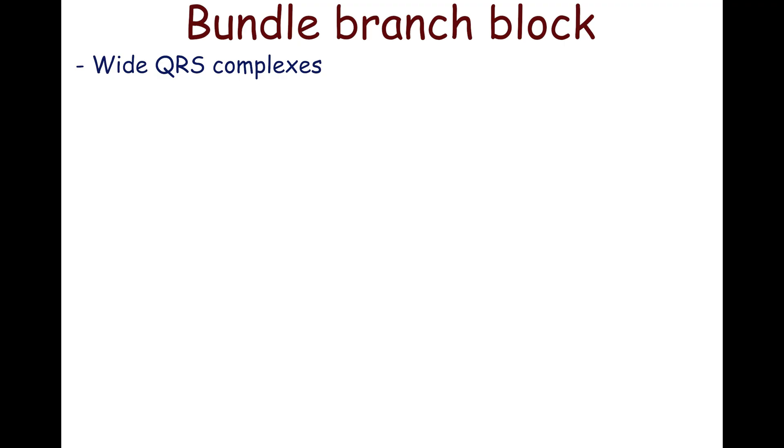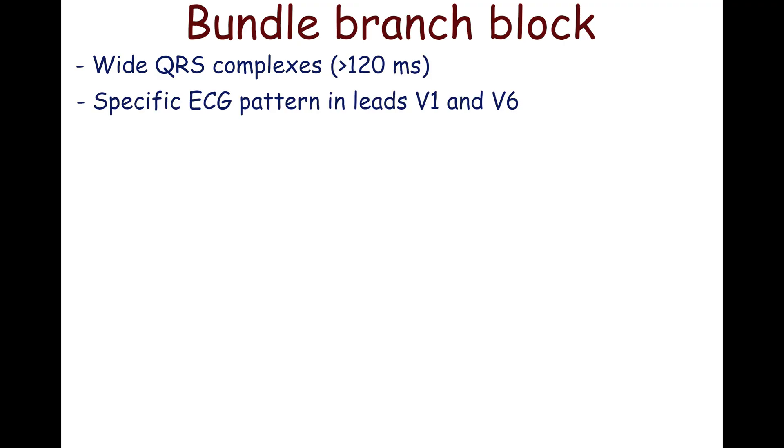Bundle branch blocks produce wide QRS complexes — in other words, more than 120 ms — with specific patterns in leads V1 and V6.